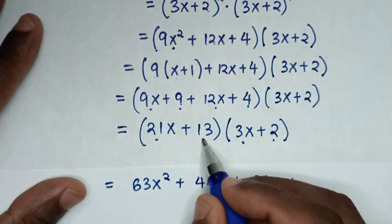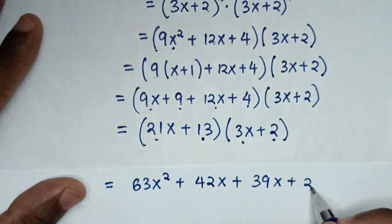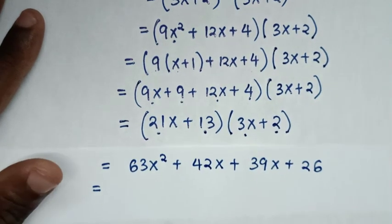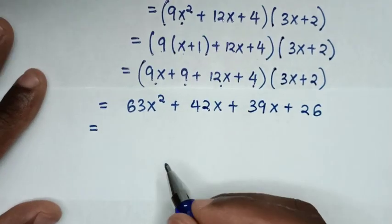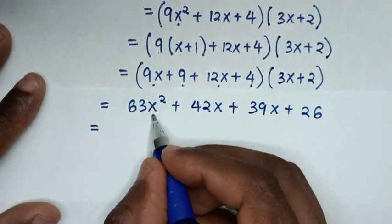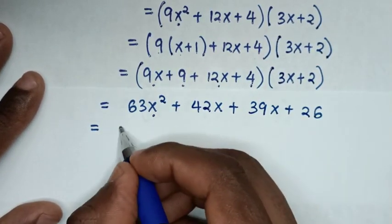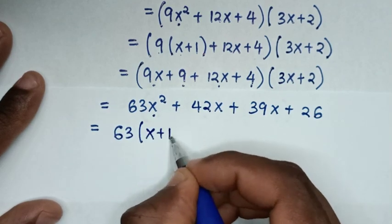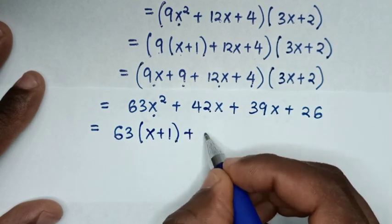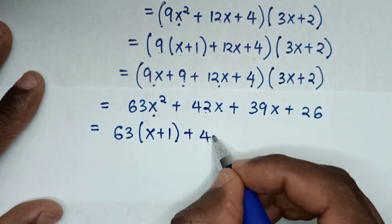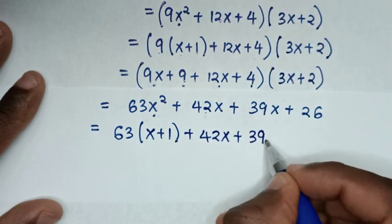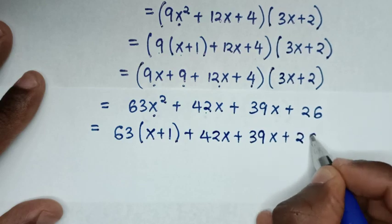Continuing the expansion, substituting x squared with x plus 1 again where needed, it will be 63 bracket (x plus 1) bracket, then plus 42x plus 39x plus 26.